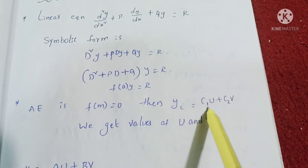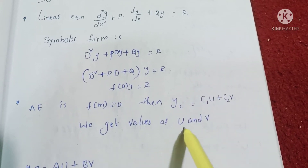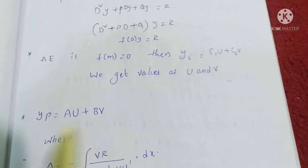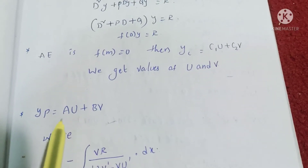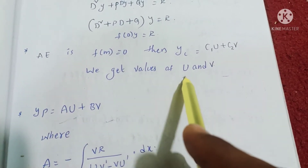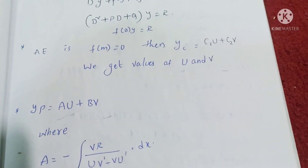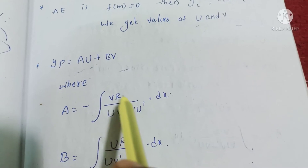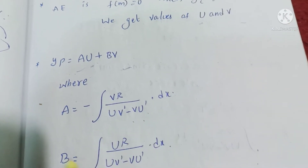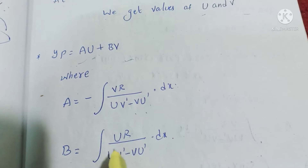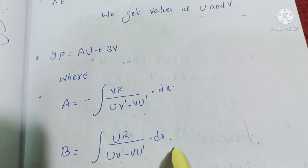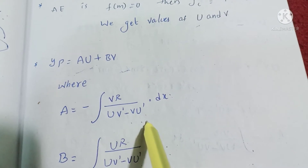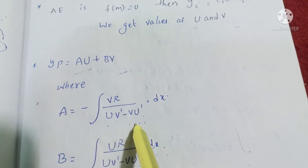Comparing yc, we identify u and v values. The particular integral is yp = Au + Bv. The formula for A is: A = −∫(vR / (uv′ − vu′)) dx. The formula for B is: B = ∫(uR / (uv′ − vu′)) dx.